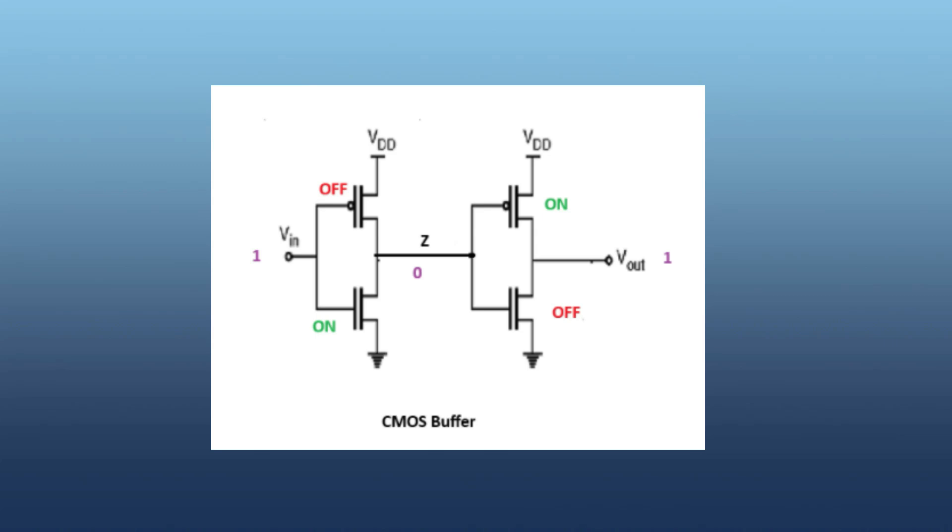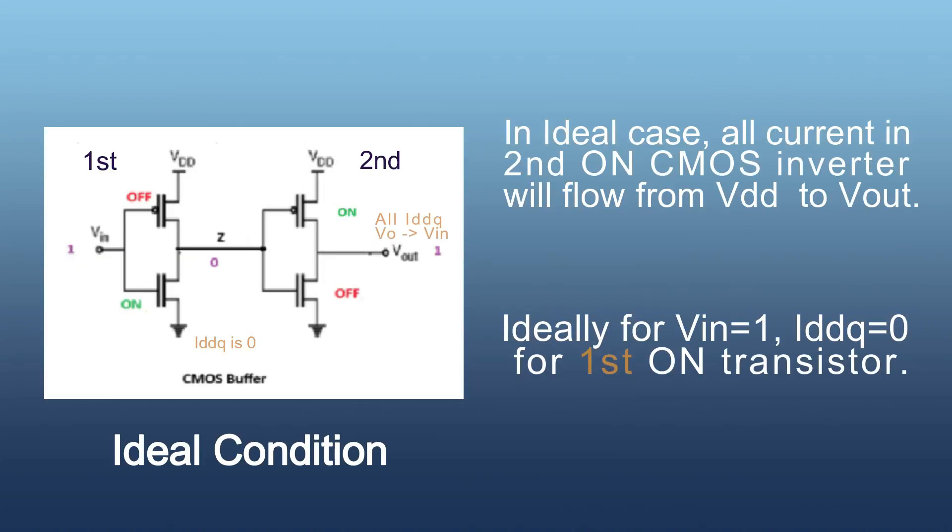For the first inverter, PMOS is off and NMOS is on, and VOUT is equal to 1. For the second inverter, PMOS is on and NMOS is off. OFF transistors will work like an open circuit, so no current will flow through them. Only ON transistors will work. Ideally, for second inverter as VOUT is 1, all current will flow from VDD to VOUT. Similarly, in ideal condition, for first inverter as NMOS is ON, Z will be at 0V and no current will flow from Z to GND.